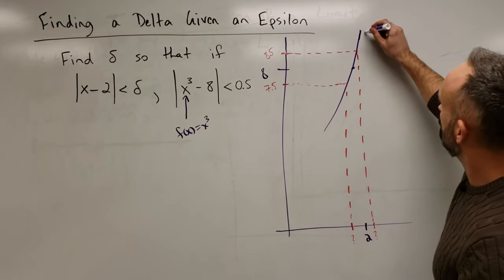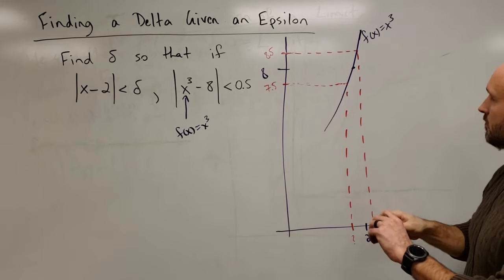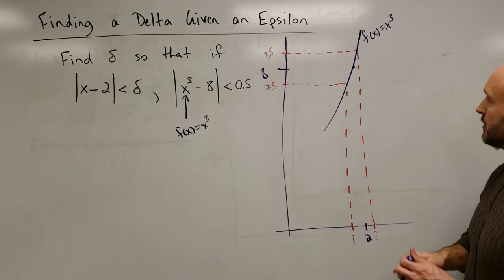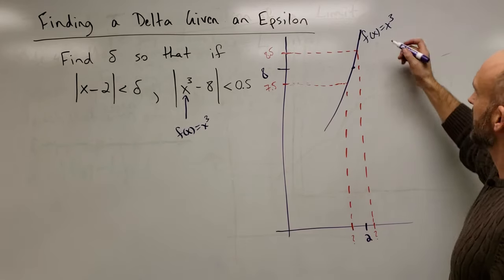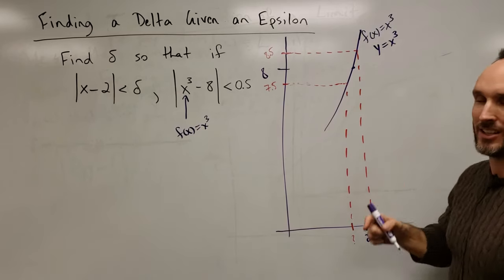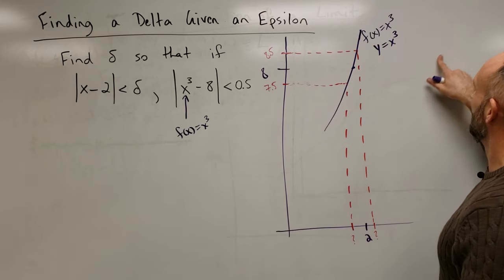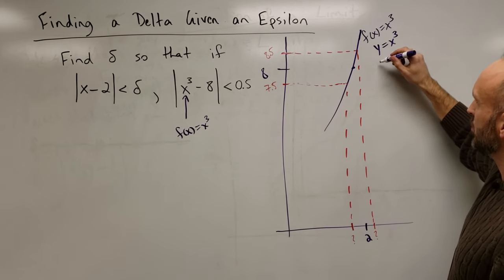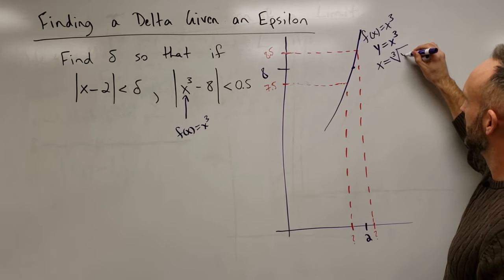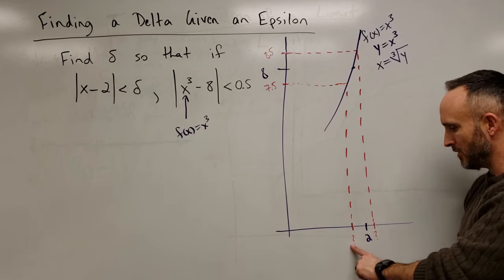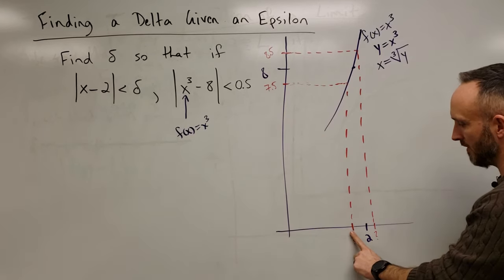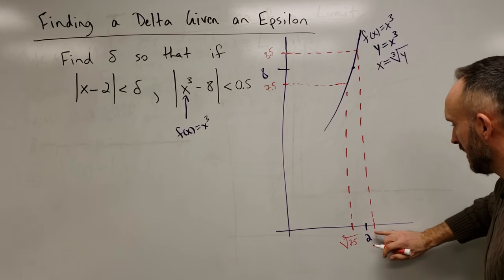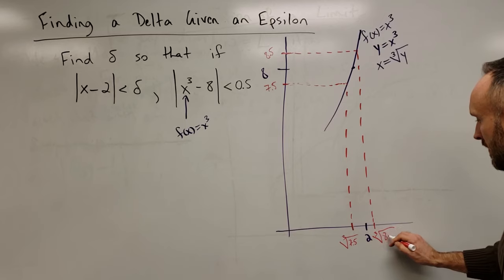Now, this function is f of x equals x cubed. So, how do I take y values for the x cubed function and trace them back to their x values? This is the y equals x cubed function. This tells us how to calculate y. You cube the x values. How do you calculate the x values? You can solve this for x. Take the cube root of both sides and you can see that x would be the cube root of y. So, in other words, this x value would be the cube root of 7.5. So, this is the cube root of 7.5. And then this guy is the cube root of 8.5.